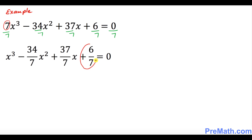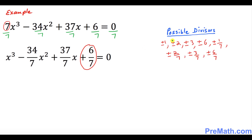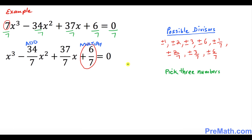The next step: I want you to look at the very last number, which is 6 over 7. We are looking for the possible divisors or factors of this fraction. Our possible divisors turn out to be all these numbers as you can see. In the next step, we are going to pick any 3 numbers among these possible divisors such that if you add them you get negative 34 over 7, and if you multiply them you get 6 over 7.